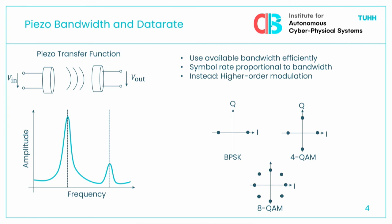Let's first look into the limited bandwidth I mentioned. A piezoelectric disc — shown here as a transfer function from one piezo to the next — has a resonance frequency, and at this resonance frequency there's a high, very narrow peak in the transfer function. So we can only really use the bandwidth close to the resonance. That is a problem because if we want to speed up data rates and symbol rates, that will expand the bandwidth we use. So that's not really an option. The alternative is to keep the lower symbol rate but use higher order modulation to use the available bandwidth more efficiently.